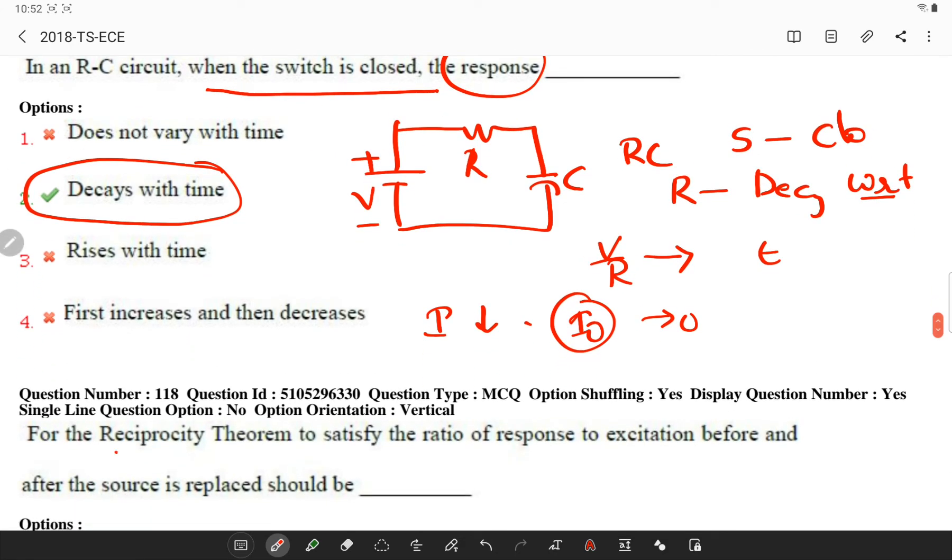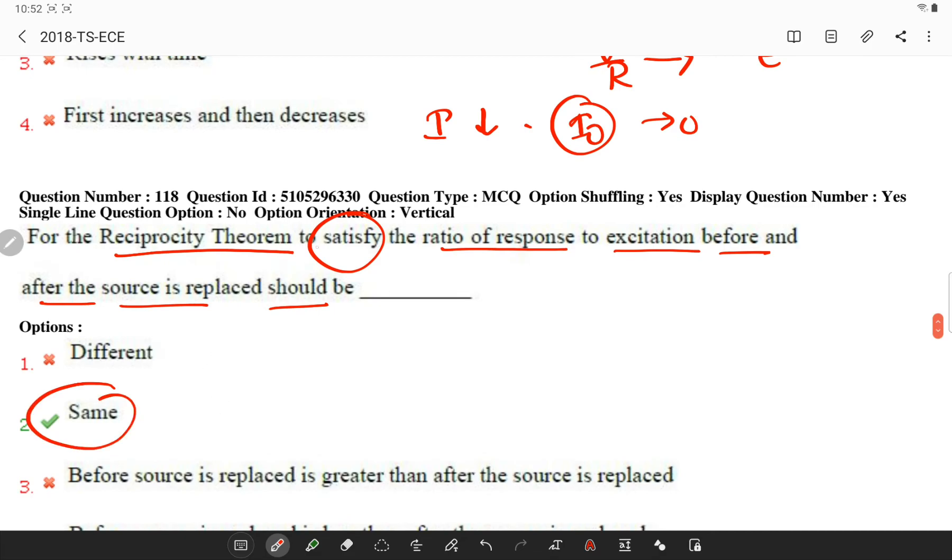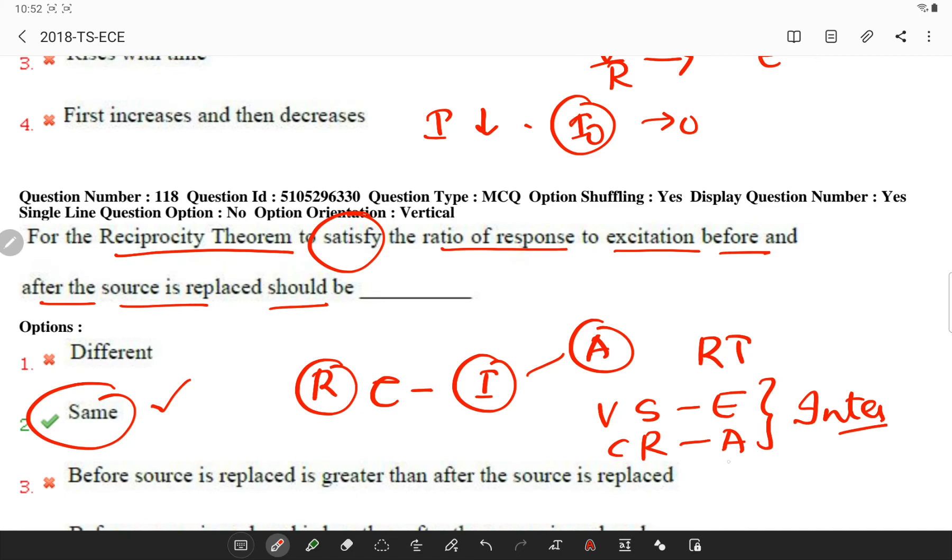For reciprocity theorem, to satisfy the ratio of response to excitation before and after the source is replaced, should be, so for reciprocity theorem, to satisfy this condition, it must be with the same. The response of a circuit is current, which is measured through ammeter, and according to the reciprocity theorem, voltage source, which is the excitation, and current response, in which you are using an ammeter, are interchangeable for solving the network, and the ratio of response to excitation is always constant as per reciprocity theorem.